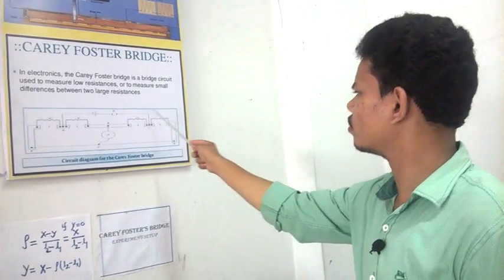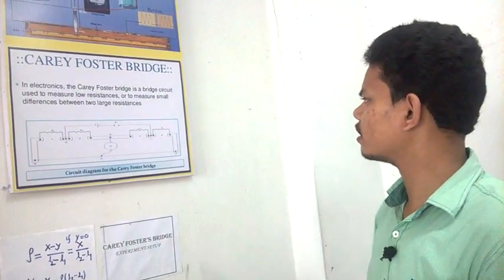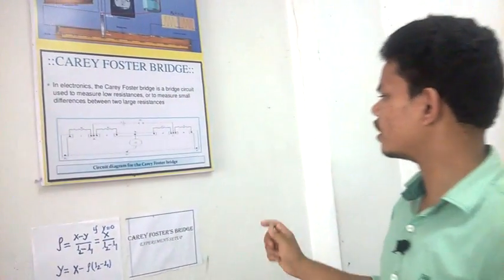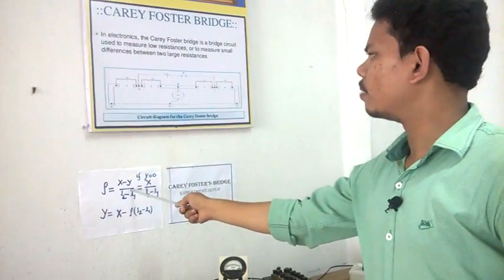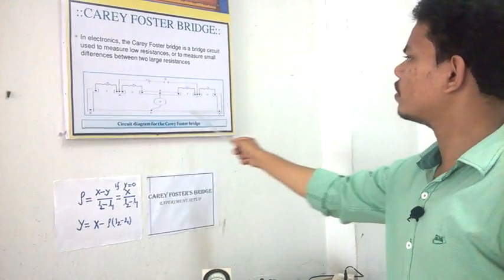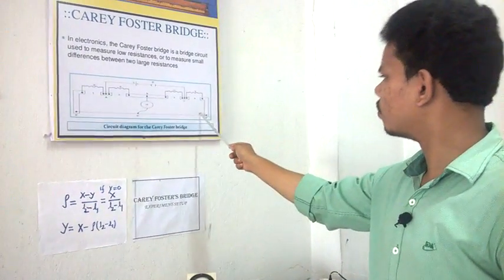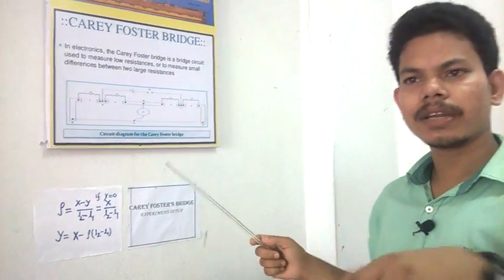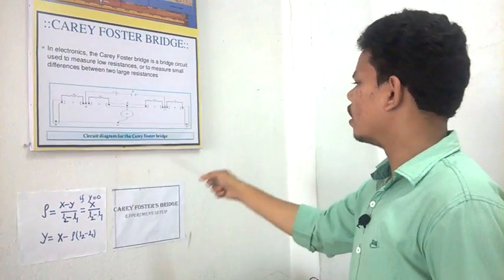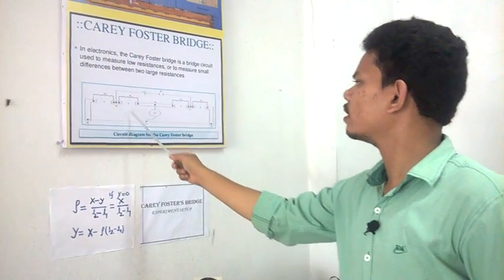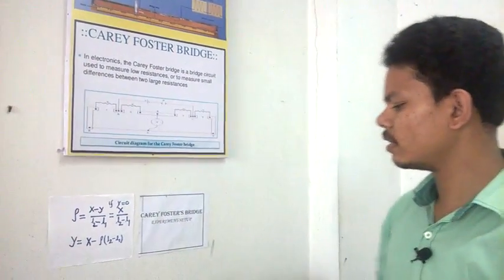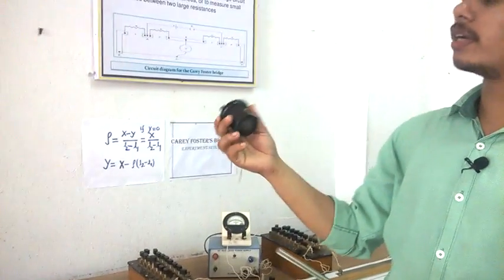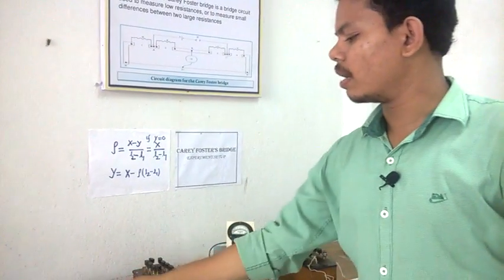Similarly, there should be a right inside resistance. In our experiment, the required formula is that first we have to find out the resistivity of this wire means resistance per unit length means specific resistance and an unknown resistance. This is our unknown resistance. We have to find out the resistance of this resistance.